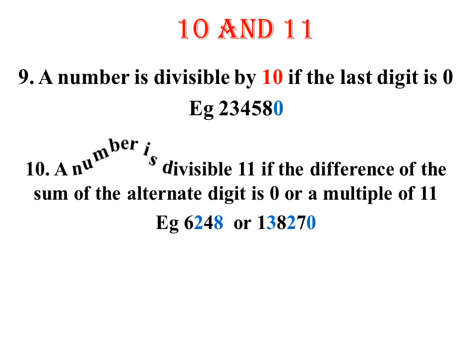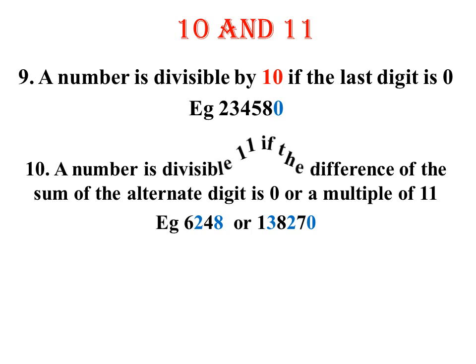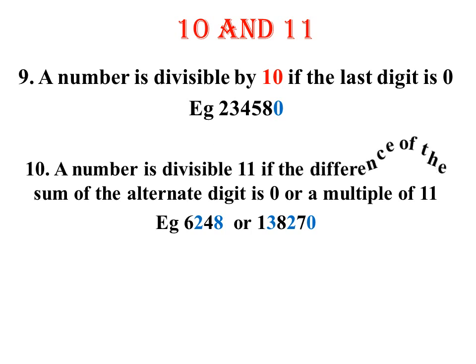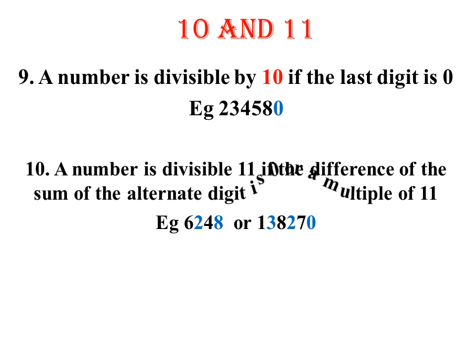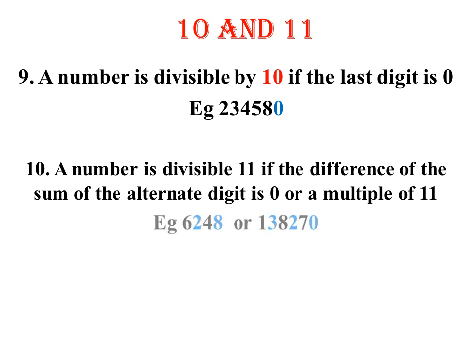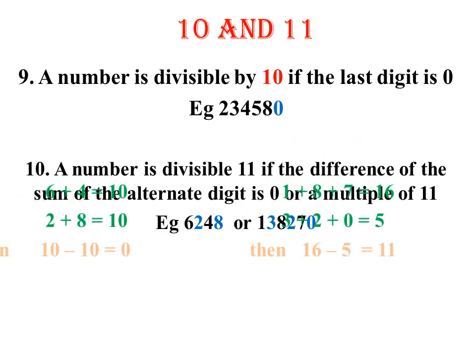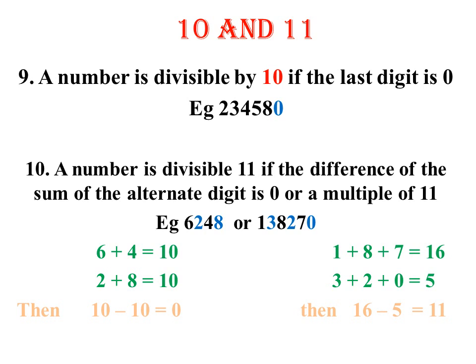The last number we are looking at is 11. A number is divisible by 11 if the difference of the sum of the alternate digits is 0 or a multiple of 11. Looking at our first example, the alternate numbers are 6 and 4 — if you add them, you get 10. And the other alternate numbers are 2 and 8 — if you add them, you get 10. Therefore the difference between 10 and 10 is 0, so the number is divisible by 11.